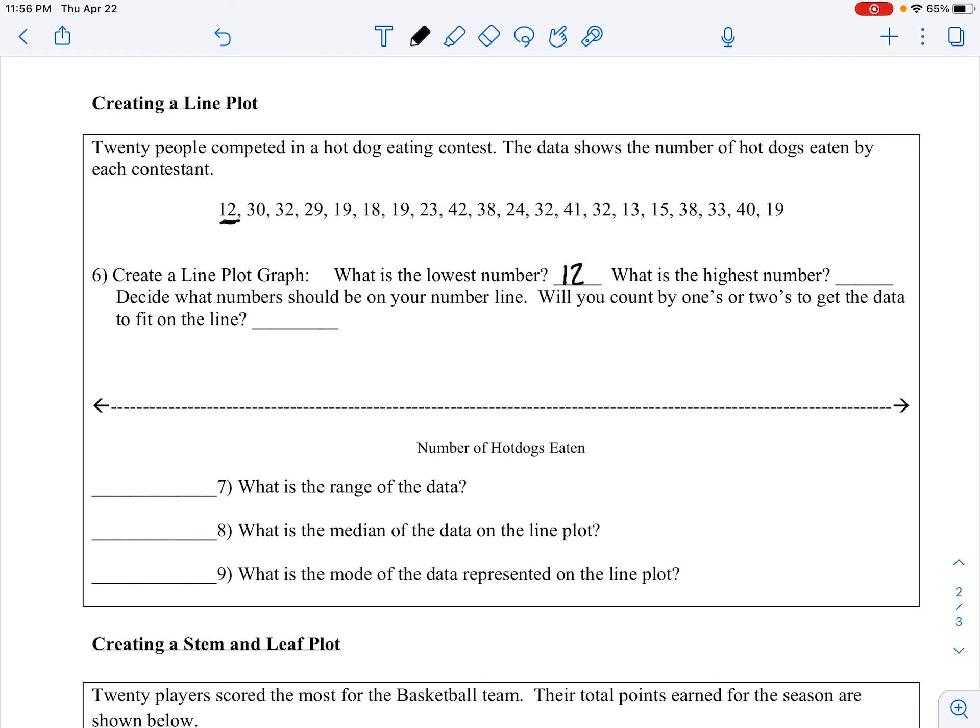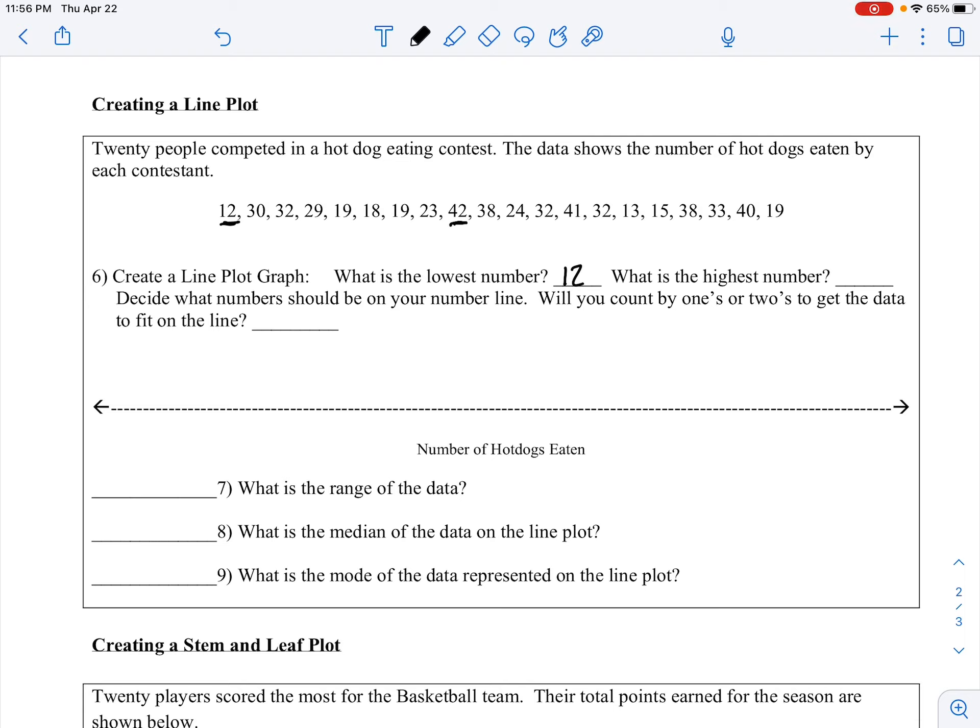What is our highest number? I see a 42 there. Let's make sure we don't have anything higher than 42, and it looks like we don't. So we need to decide what numbers should be on our number line. We don't have a crazy amount of space here, but we'll be putting x's in between. Let's count by twos to make our life easy - we've got 12, 14, 16, 18, 20...